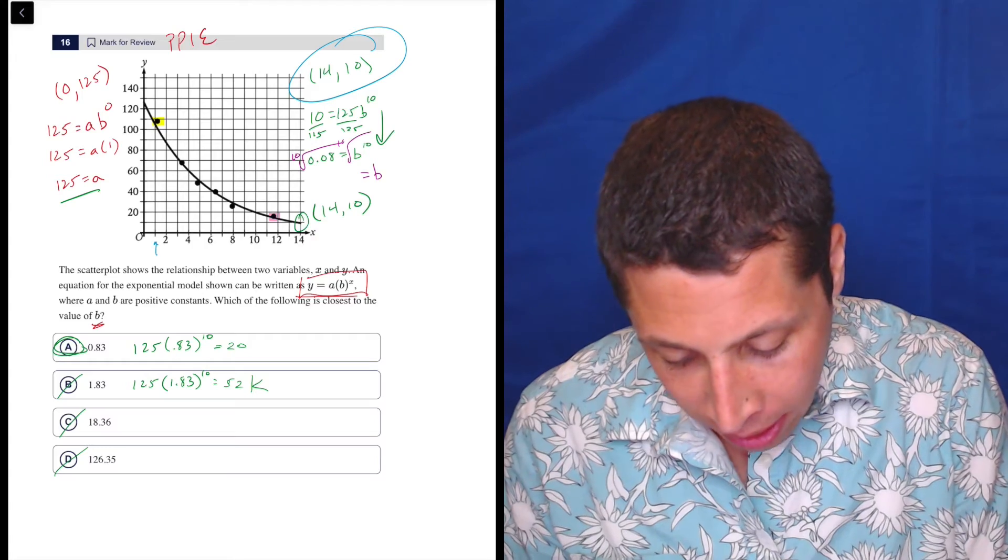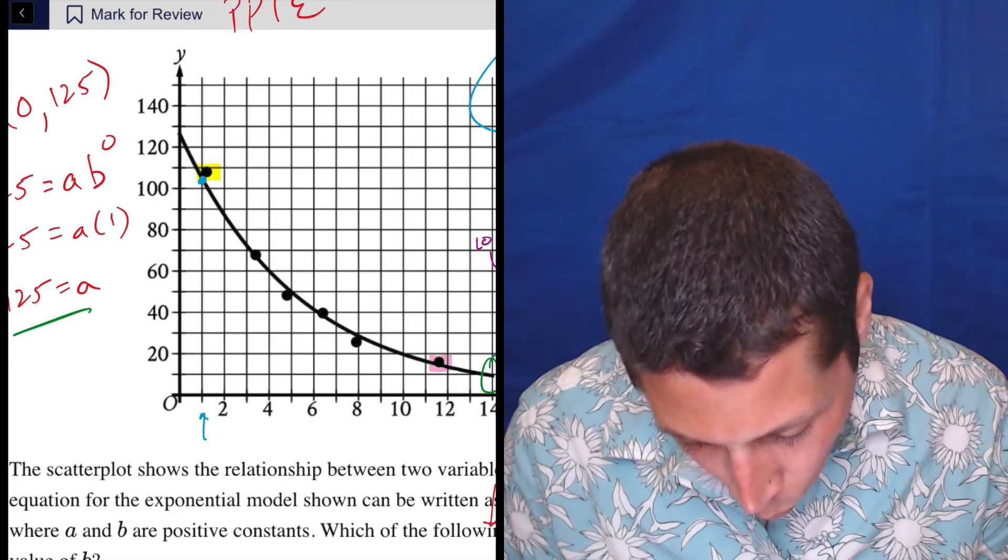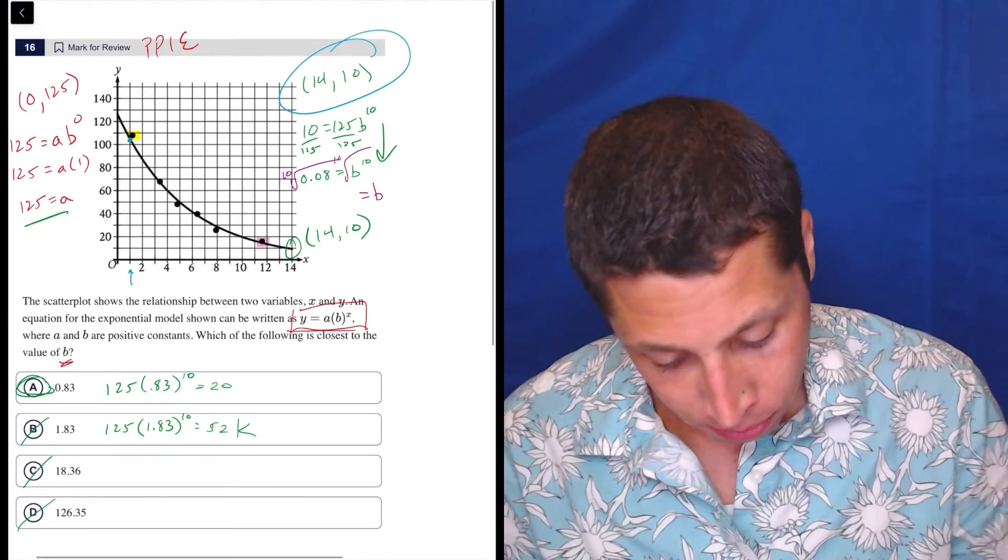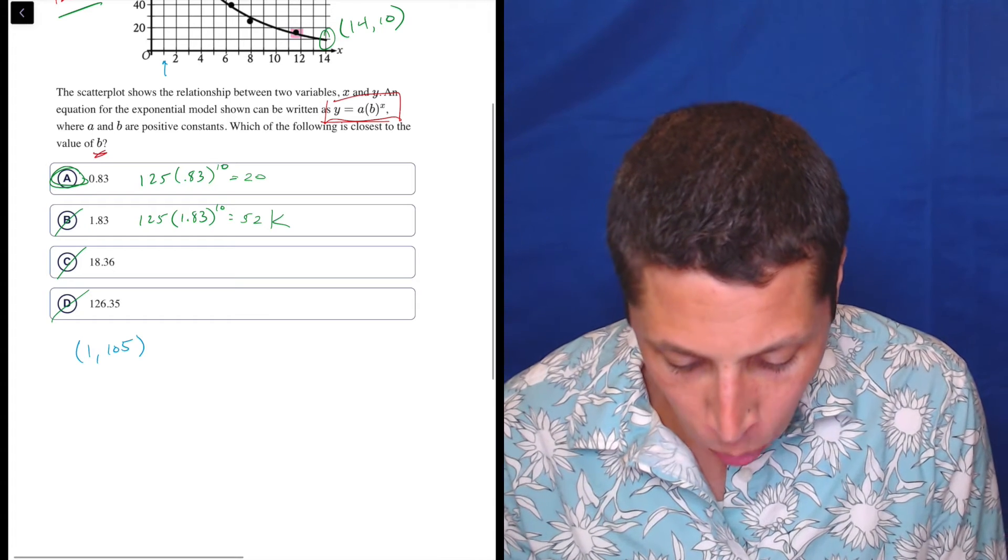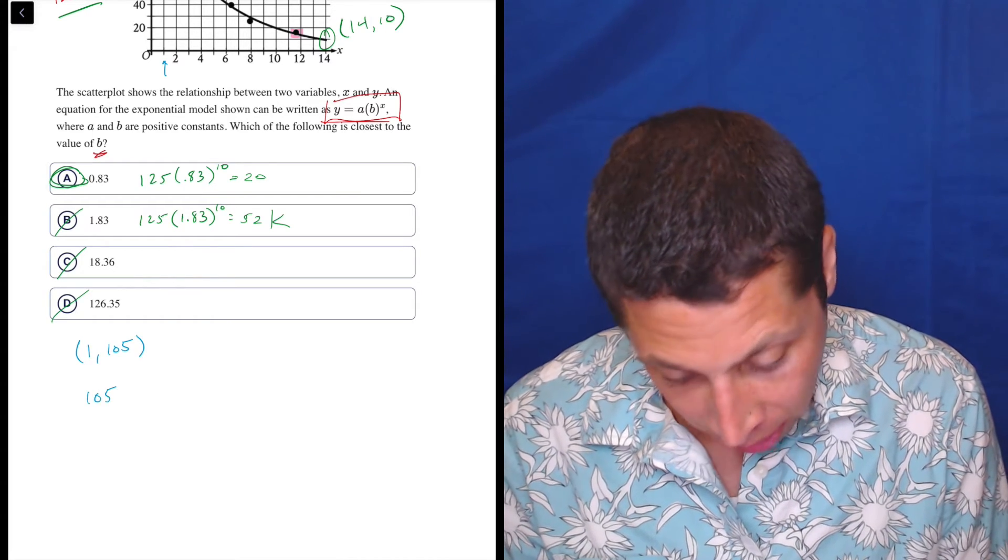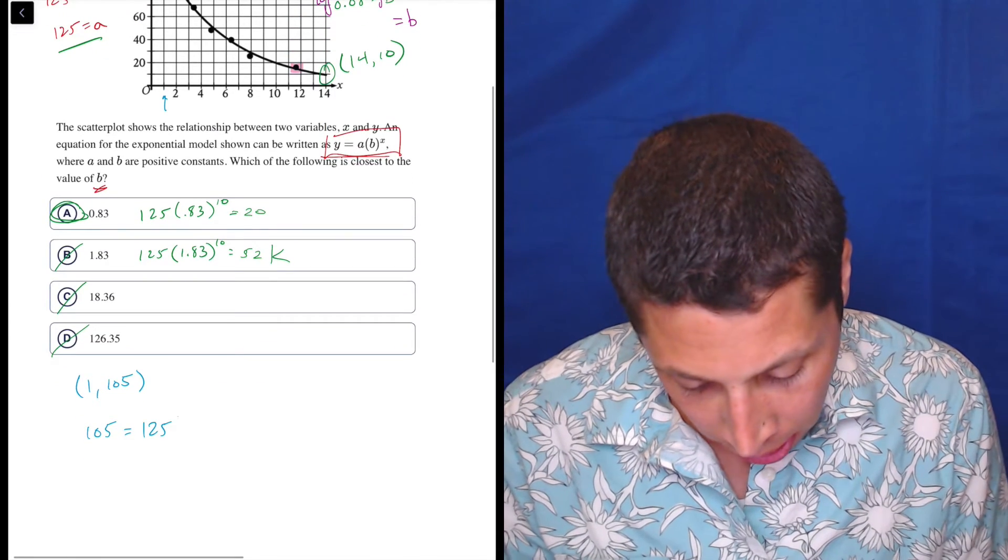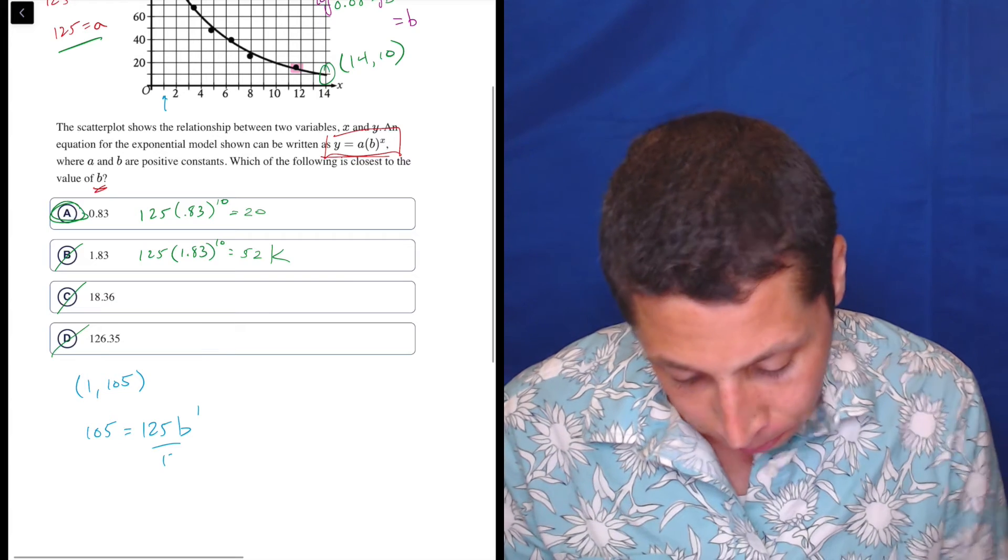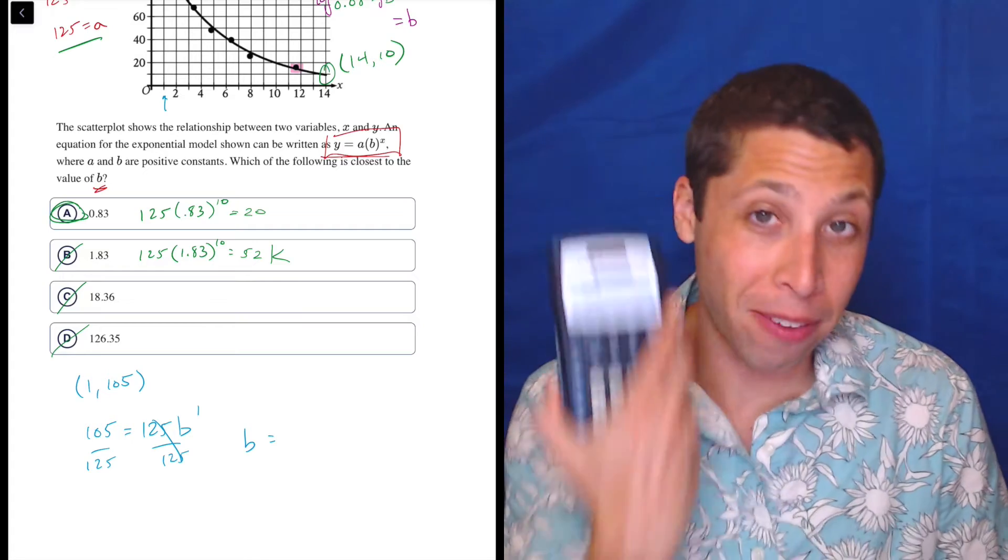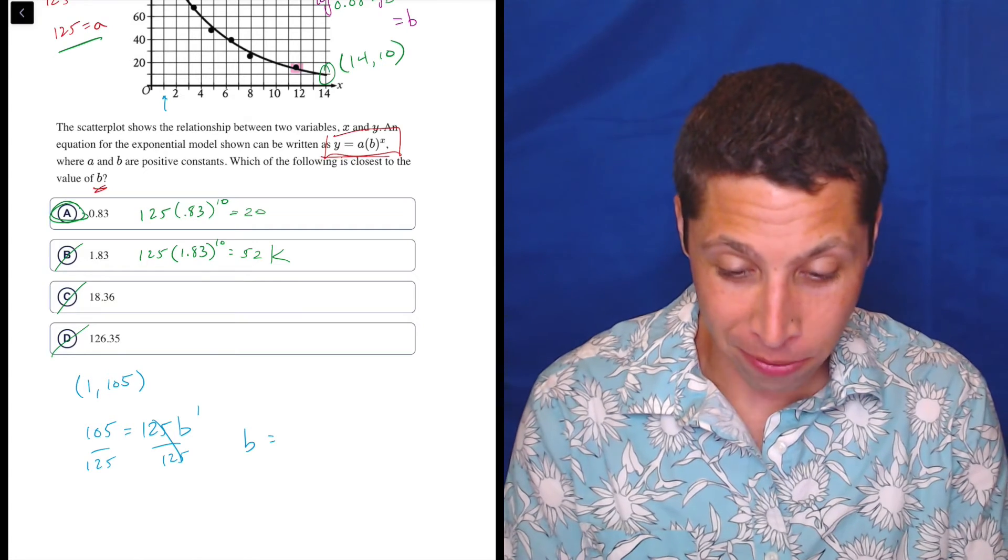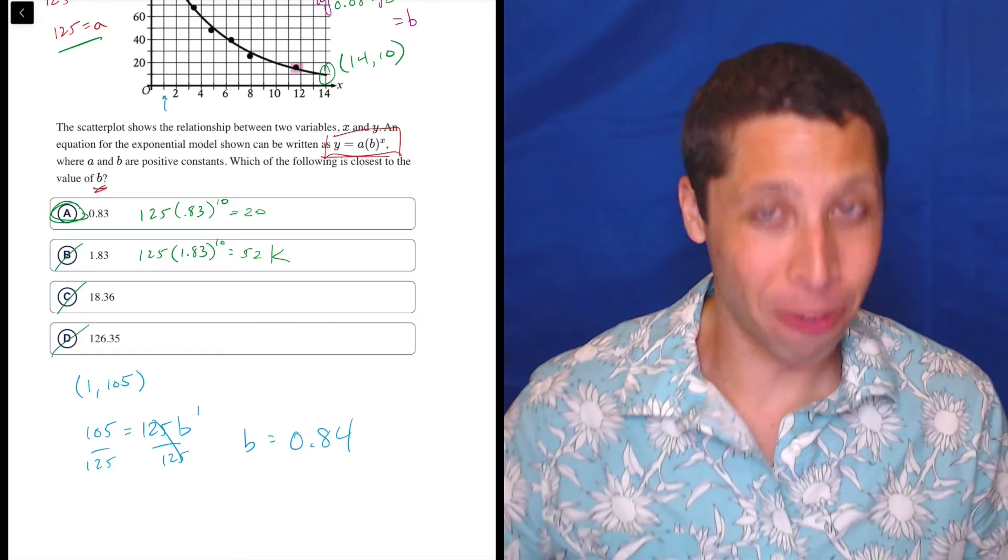What if we had just done the exponent with 1? So that point here is something like 105. So that point would have been 1, 105. So if I were using my equation, it would be 105 is equal to, we said A was 125. And then B to the first. So now my math is so much easier. I don't even need to worry about that exponent. B is just 105 divided by 125, 105 divided by 125, which is the much more satisfying 0.84.